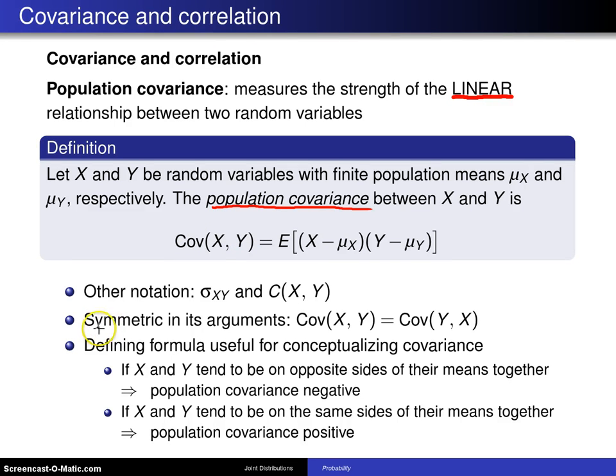This definition is symmetric in its arguments. That is, Cov(X, Y) = Cov(Y, X), and that's simply because these two arguments in the expected value operator are multiplied, so if they are interchanged, you will still get the same value.